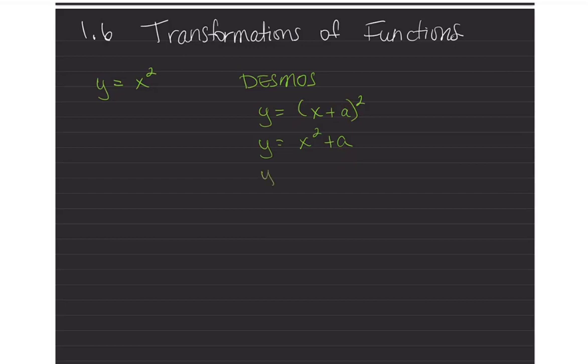And then the other one is y equals ax squared. So make a positive and negative, and then make it where it's greater than 1, and then also do one where it's less than 1.